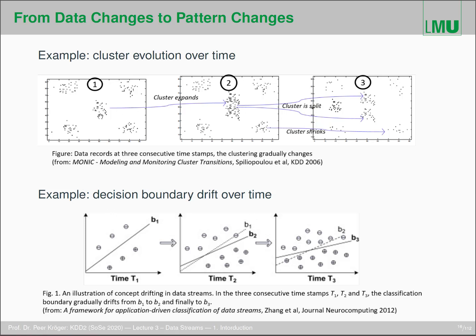The same holds true not only for clustering but also for classification. What can happen with classification? Typically, the decision boundary may drift over time. Here you see an example where at time point T1, the decision boundary between the two classes minus and plus is somewhere here. You may have a perfect support vector machine distinguishing between those two classes. After some time, at time point T2, because new training examples came in as you see here, the decision boundary shifts.